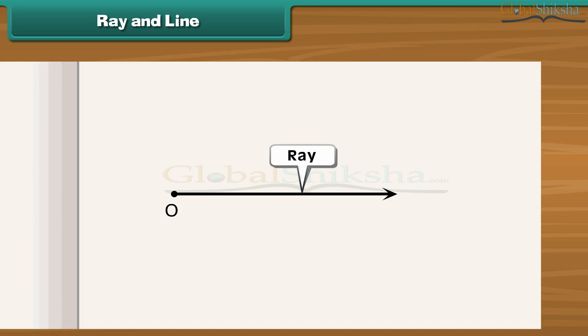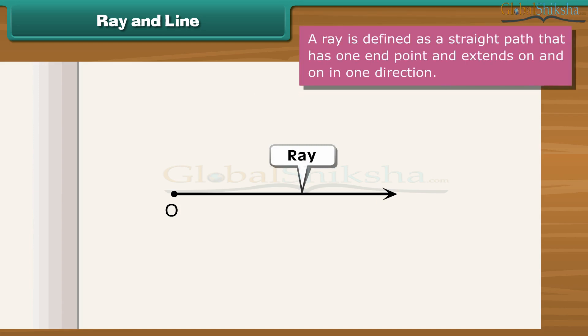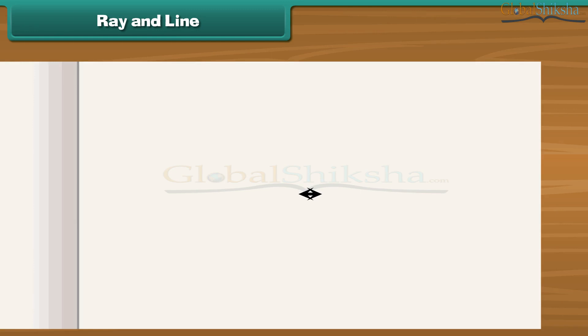We define a ray as a straight path that has one endpoint and extends on and on in one direction. What if a straight path extends on and on in both directions?